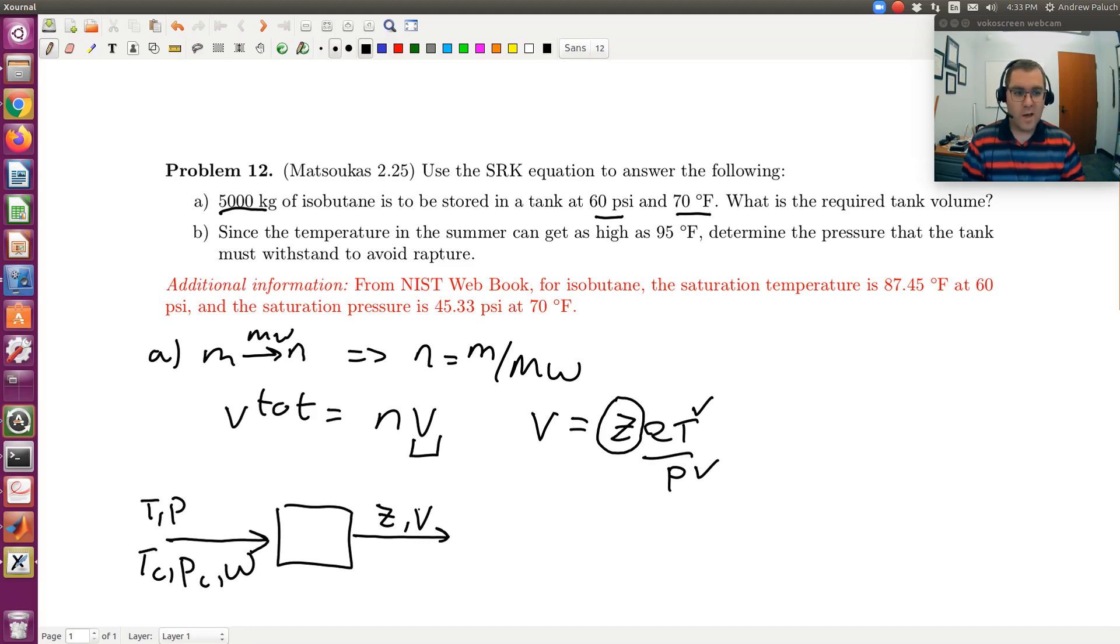So at the same pressure, my temperature is greater than the corresponding saturation temperature. So it must be that I have a vapor. And at 70 degrees C, well, hold on, let's be. So at 60 psi, so at this pressure,